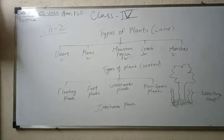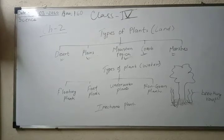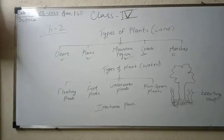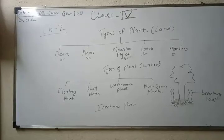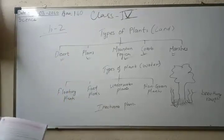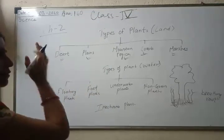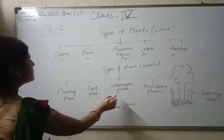The plants found in water are called aquatic plants. Aquatic plants grow in water bodies like ponds, lakes, rivers, and oceans. There are three types of aquatic plants: plants that float on the surface of water, plants that are fixed to the bed of the water body, and plants that are completely submerged under water.